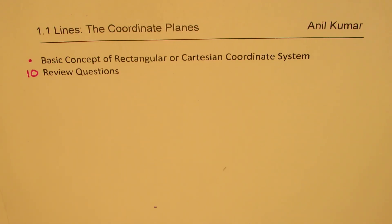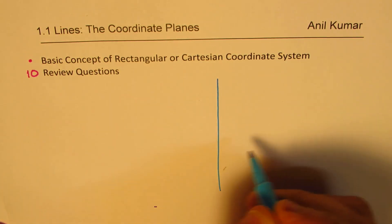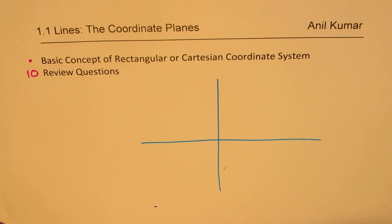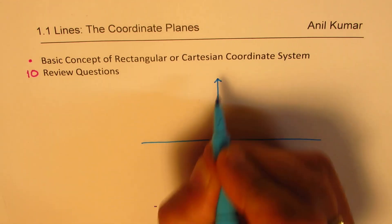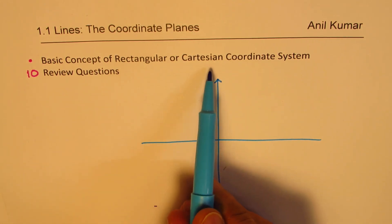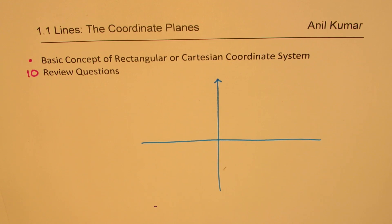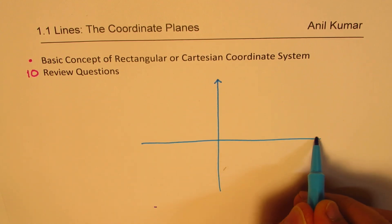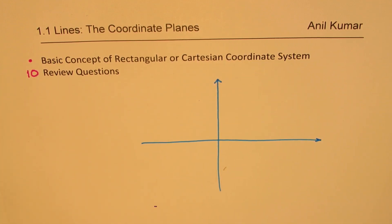I am Anil Kumar. Welcome to my series on lines. We'll begin with coordinate planes. Consider this paper itself — we'll call this our xy plane and say that everything on this xy plane can be located with the help of our coordinate system, which is a rectangular or Cartesian coordinate system. We'll understand what this coordinate system is and then take up 10 review questions. I'll also provide test questions and links related to the topic so you can explore more about its applications.